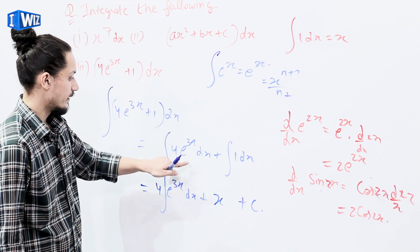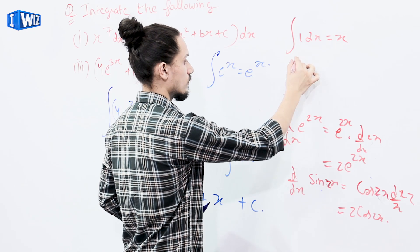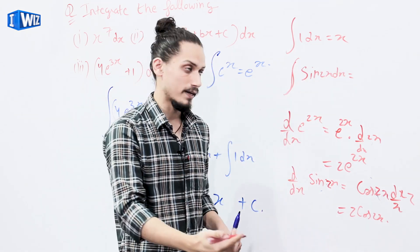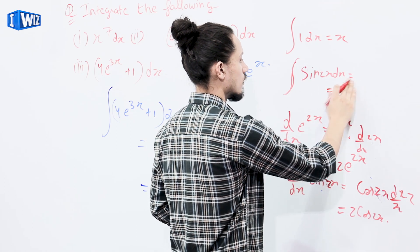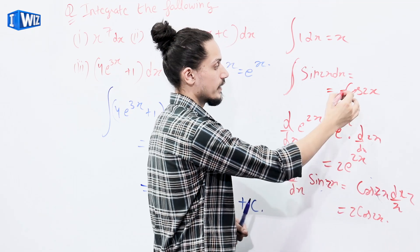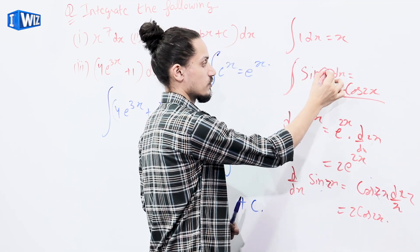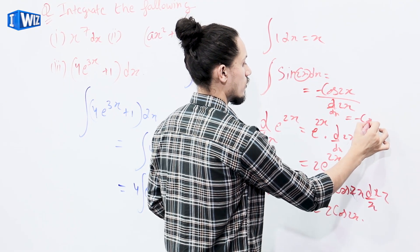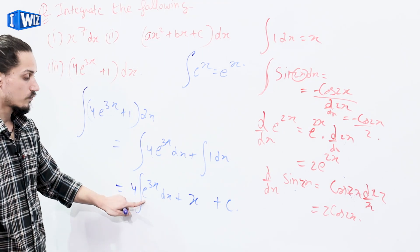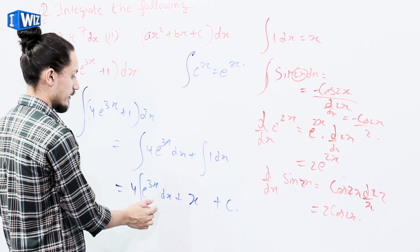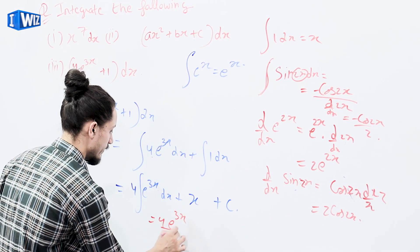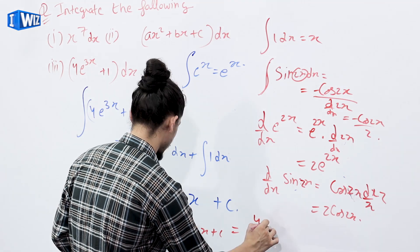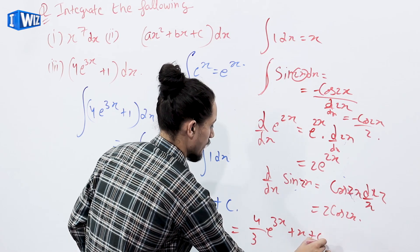The same small trick is used in integration. Integration of e^(sin 2x) — sin(2x) dx: first take the integration of sin, giving minus cos(2x), then divide by the differentiation of the inner function — d/dx(2x) — giving minus cos(2x)/2. Applying this to 4e^(3x): integration of e^(3x) gives e^(3x) divided by d/dx(3x), which is 3. So we get 4/3 · e^(3x) + x + C as the final result.